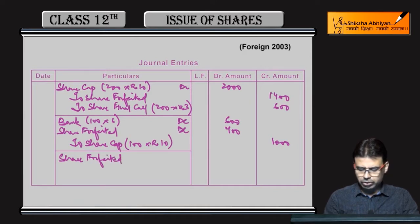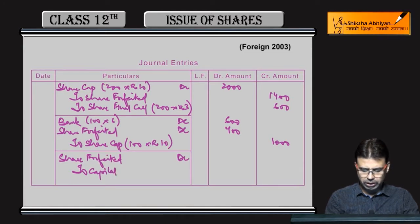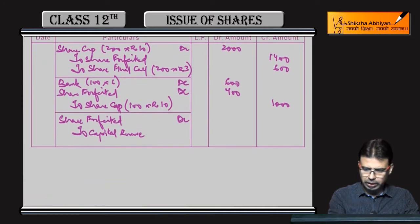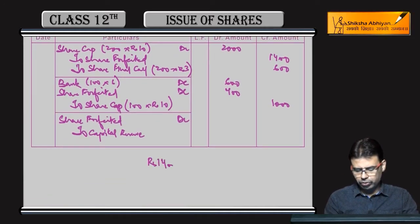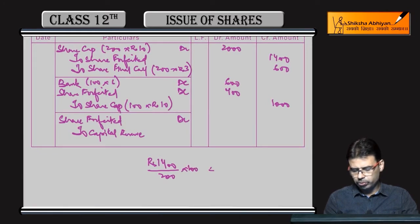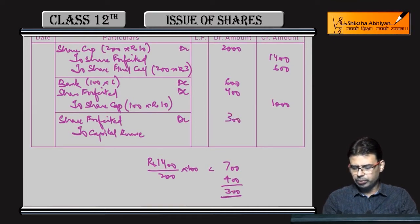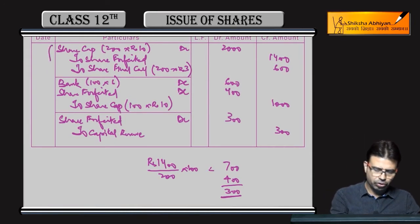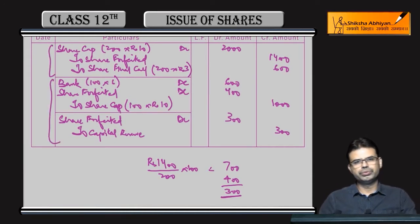Toh formula lagaenge bachche: share forfeited debit to capital reserve. Question mein naya kuch nahi hai, is tarah practice kar chuke ho. Total amount forfeited: 1400, 200 shares pe thahan — 100 pe 700 hota hai. 400 at the time of reissue aapne debit kar diya hai, baqi 300 aapka capital reserve. Clear — forfeiture, then reissue — okay, clear, done.